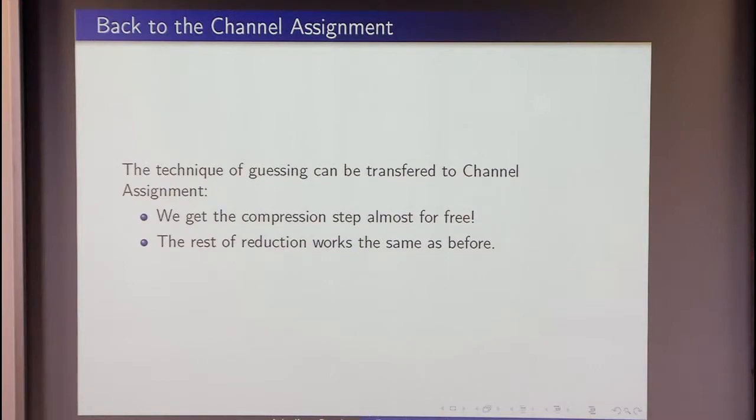And moreover, after all of that, we can get back to the channel assignment, and we can replace the encoding in permutation by this kind of reduction one-to-many. And in this case, we are getting compression step almost for free. The cost is in taking many different instances instead of one instance. And the rest of reduction is working the same. Now the reduction is complete. Thank you very much.